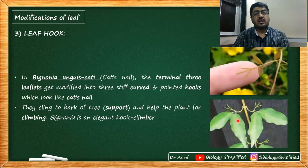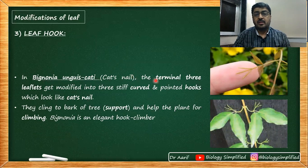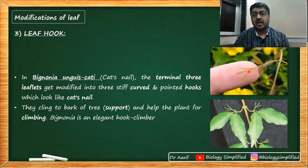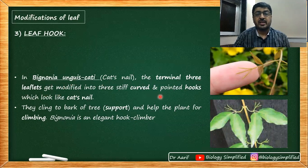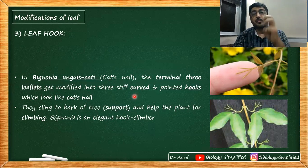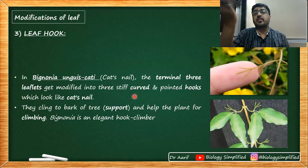In the plant Bignonia — common name 'cat's claw' — the terminal three leaflets get modified into three stiff, curved, pointed, hook-like structures like that of a cat's nail. That's called a leaf hook. Since we mention terminal three leaflets, the Bignonia leaf is compound. It is for clinging to the bark of a tree for support and to climb up. The tendril forms a wiry structure for support, whereas here the hook attaches to the bark and helps the plant climb up.